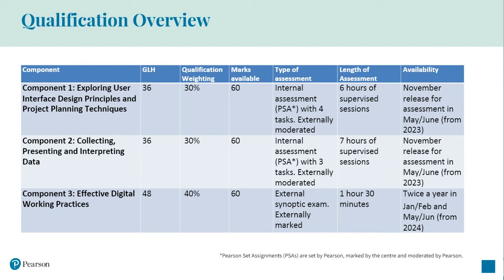The final component, component three, is 48 guided learning hours worth 40% of the overall qualification grade, and it's externally assessed by Pearson. It is an hour and a half written examination available twice each year — a session in January/February and then a summer assessment. Each assessment in the qualification is marked out of 60 available marks.